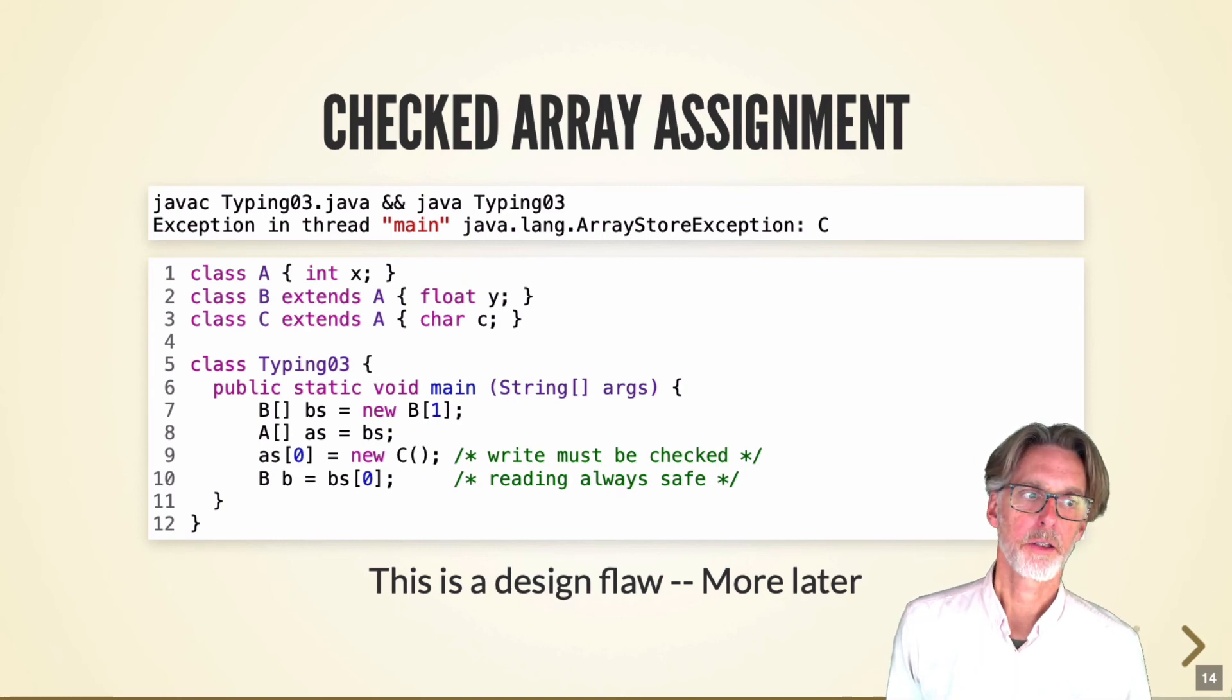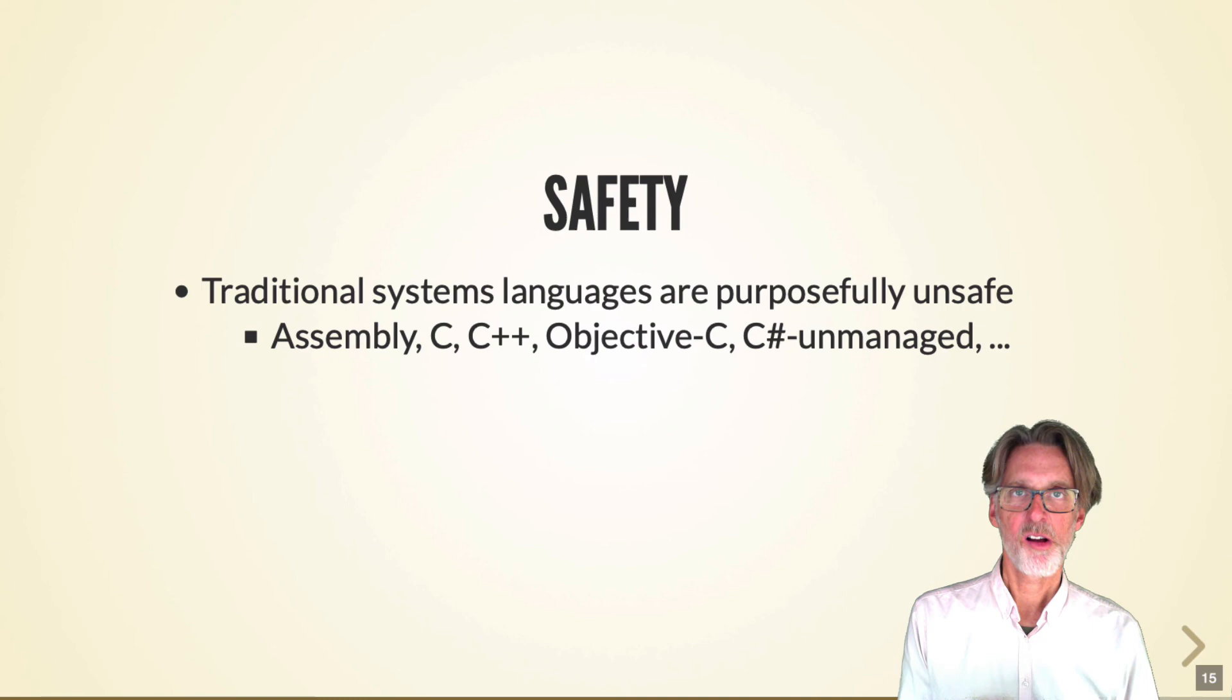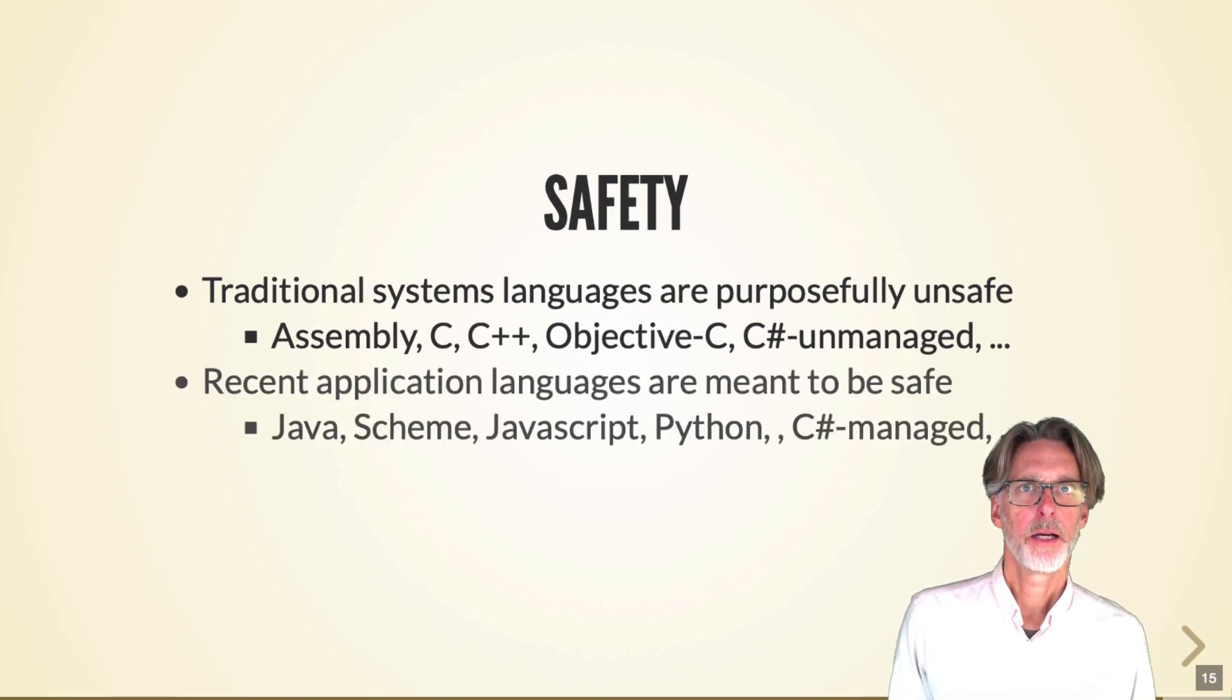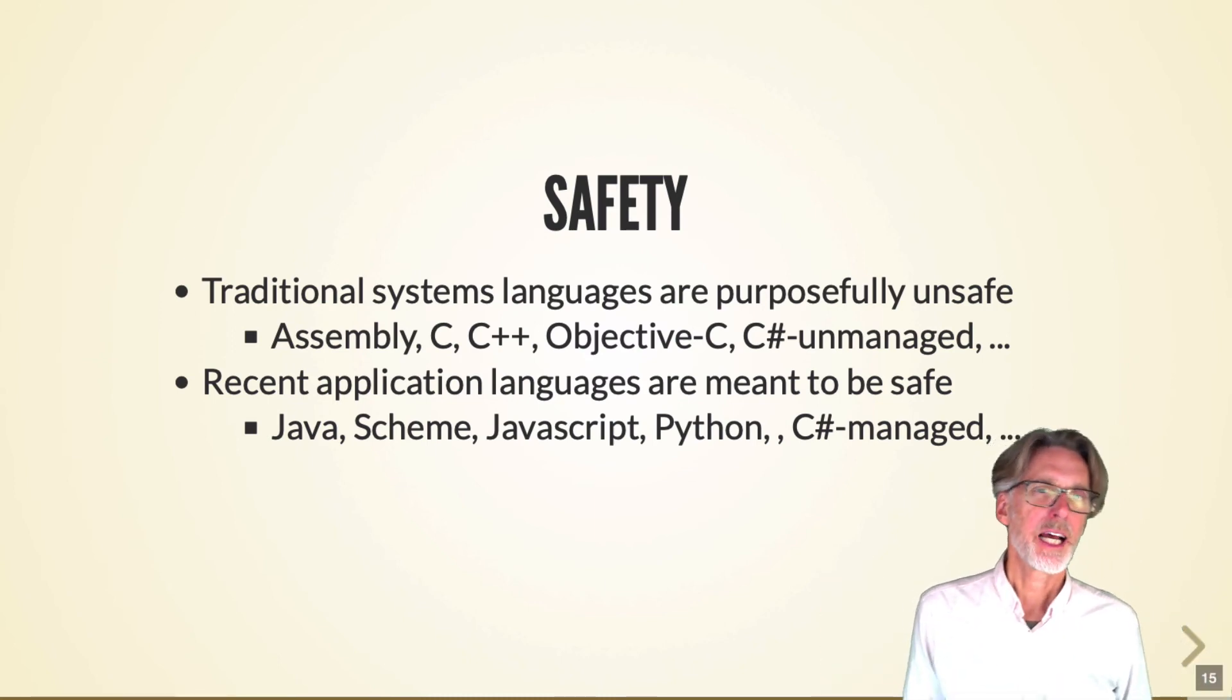Because systems languages require access to the low-level details of the machine, systems languages are, by design, unsafe. And this includes assembly languages, C, C++, Objective-C, and C Sharp's unmanaged facilities. Most other languages, we call application languages, don't require safety. And they're sort of intended to be safe, at least recent ones. And this includes Java, Scheme, JavaScript, Python, and the managed part of C Sharp.